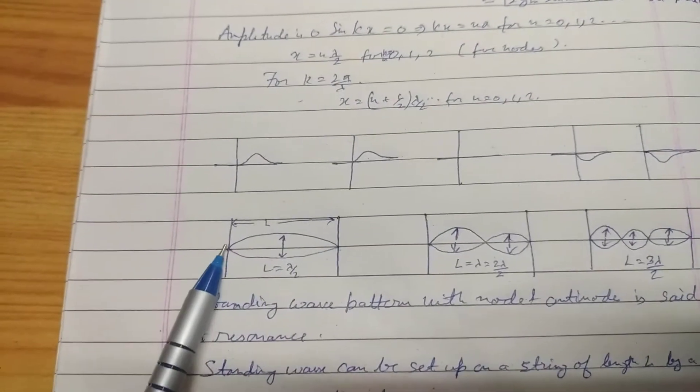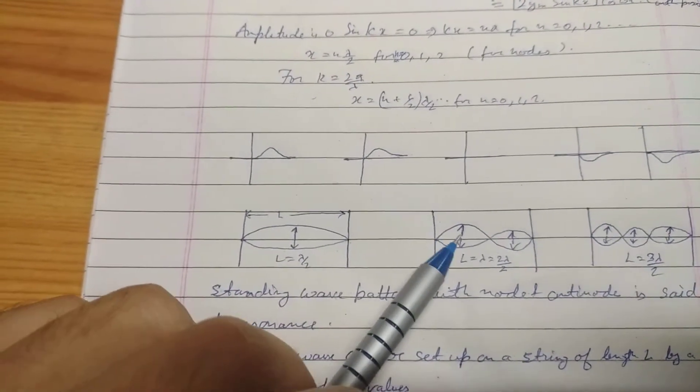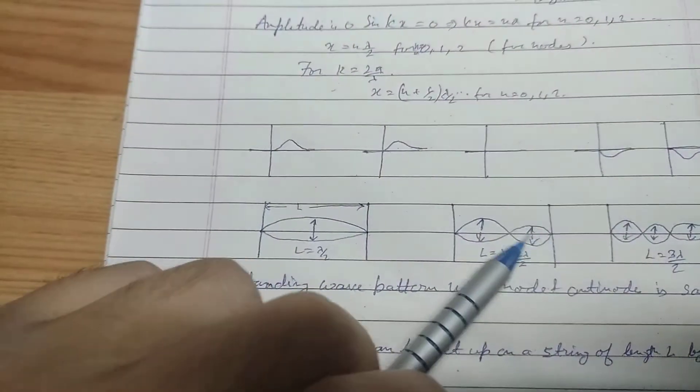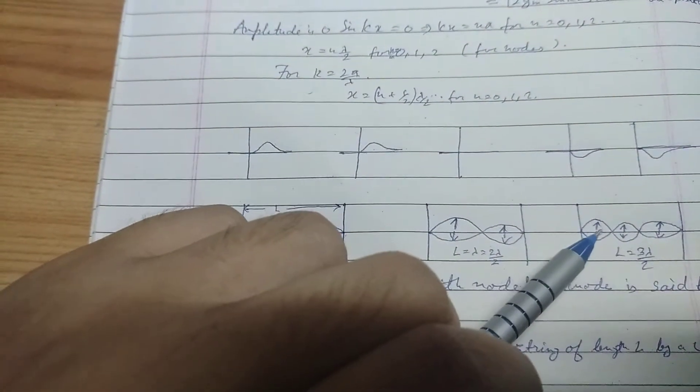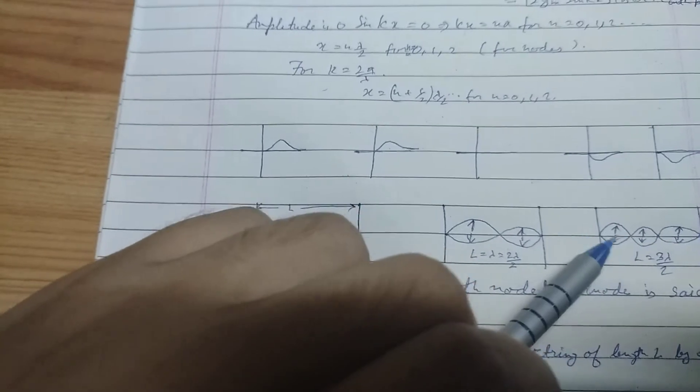That is, these two positions at the end are nodes and these are anti-nodes. These three positions are nodes and these two are anti-nodes. These three positions are anti-nodes and these four positions are nodes.